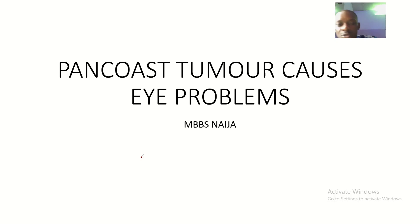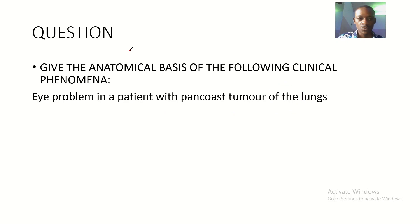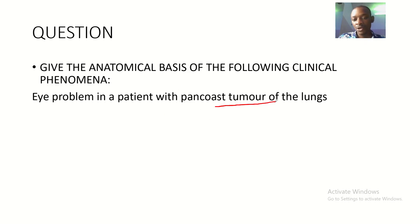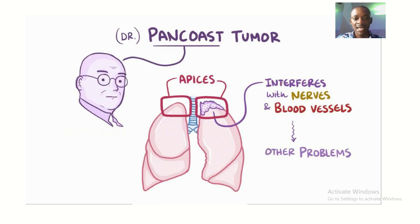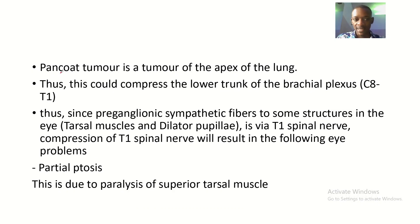Today we'll be talking about Pancoast tumors of the lungs. When the lungs has a Pancoast tumor — a tumor of the upper part of the lungs — the eye can have problems. The question is: give the anatomical basis for the eye problems in a patient with a Pancoast tumor of the lungs. What is the relationship between the lungs and the eye?